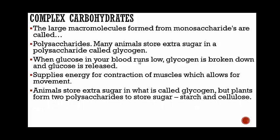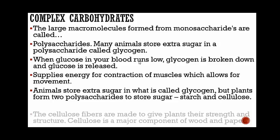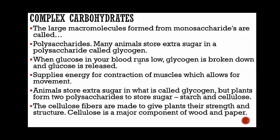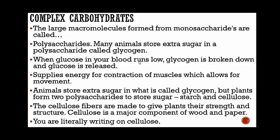Animals store extra sugar as glycogen, but plants form two polysaccharides to store sugar: starch and cellulose. The cellulose fibers give plants their strength and structure, and cellulose is a major component of wood and paper — you're literally writing on cellulose right now. It's not 100% pure cellulose, but there's cellulose in that paper.